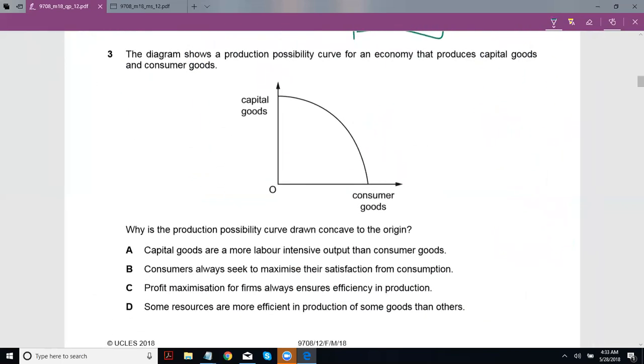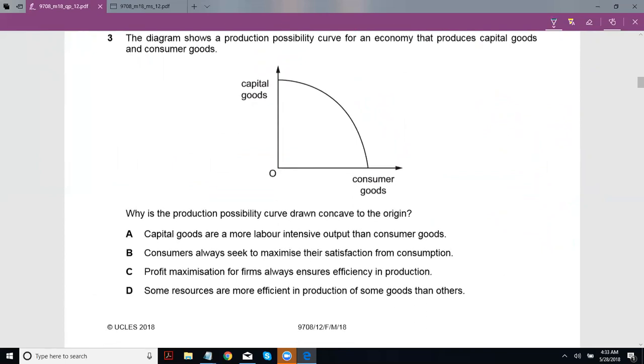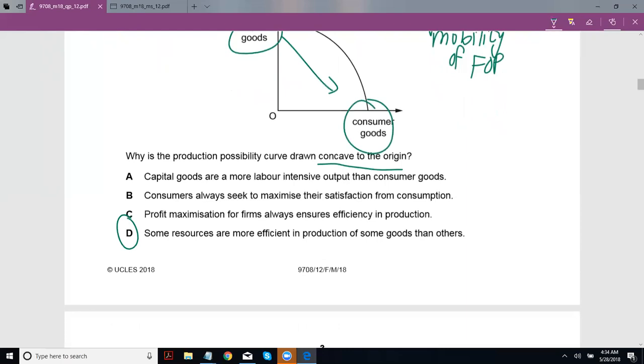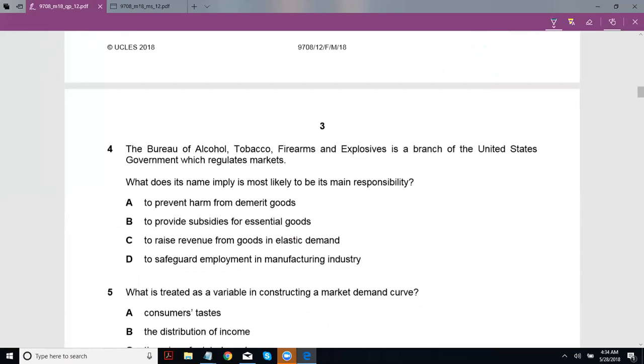Three, the diagram shows a production possibility curve for an economy that produces capital and consumer goods. Why is the PPC curve drawn concave to the origin? If you remember, this is the shape of this was because of increasing opportunity cost. And the reason was that there wasn't perfect mobility. There was imperfect mobility of factors of production. So as you switch factors of production, the idea was they wouldn't be as efficient in producing the others, in producing both things. They won't be equally efficient. So perhaps some units are more efficient in producing capital, as I switched them to producing consumer goods, obviously now you would suffer from reduced productivity and hence increased opportunity cost. That was the idea. And that's denoted by B, some resources are more efficient in the production of some goods and others. So yeah, they specialize in some, they aren't perfectly mobile occupationally at least.